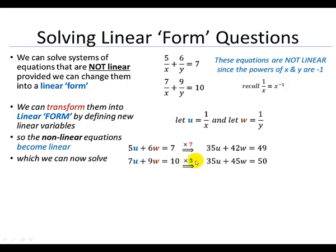And then multiplying through equation 2 by 5. 5 times 7u is 35u. 5 times 9w is 45w. And 5 times 10 is 50.